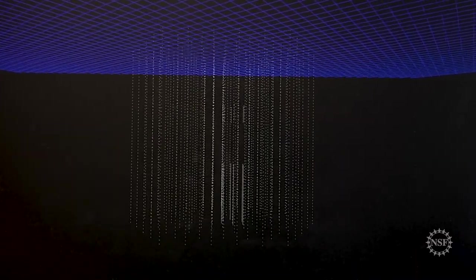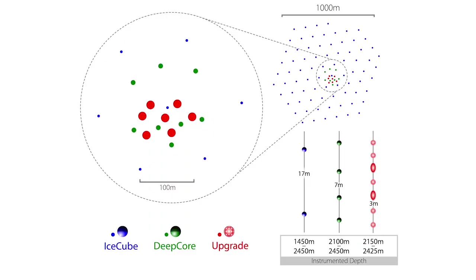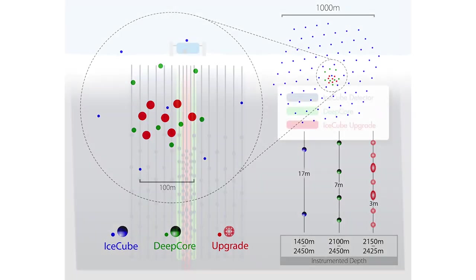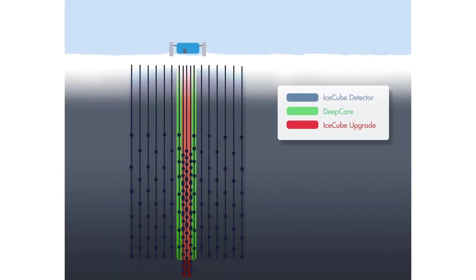The current IceCube detector consists of 5,000 modules deployed in a volume that's a cubic kilometer in extent, and the new upgrade modules are going to sit in a volume that's a thousand times smaller, so the density is going to be about a hundred times higher.